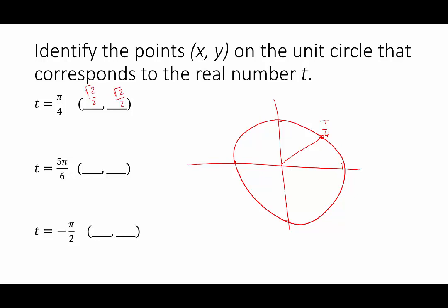The next one, when we're looking for 5π/6. So 5π/6, that's going to be over here, 5π/6. And so this one's going to have a measure of, this one will be (-√3/2, 1/2).